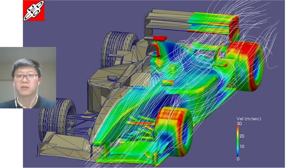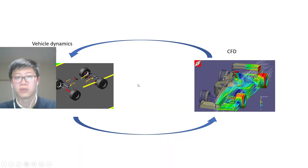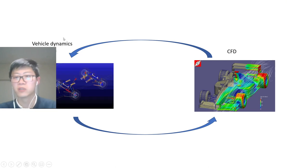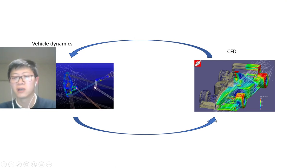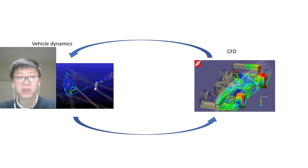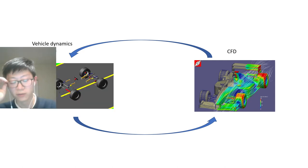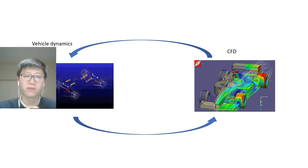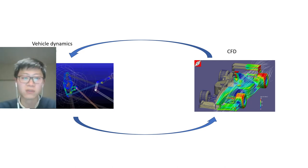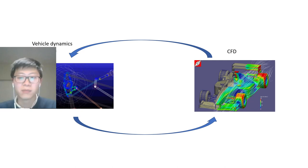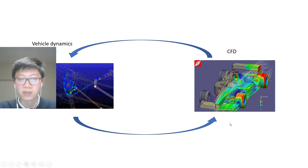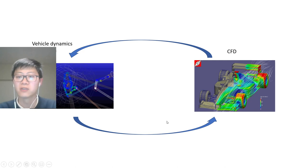If you wanted to predict whether porpoising would happen for each vehicle design, you would have to do something like the following: you'd have to somehow couple the vehicle dynamic simulation to a CFD simulation. Maybe this is something that some teams are already able to do, maybe there's even commercial software out there to do that. I'm not working in the field so I'm not aware, I certainly haven't heard of it.